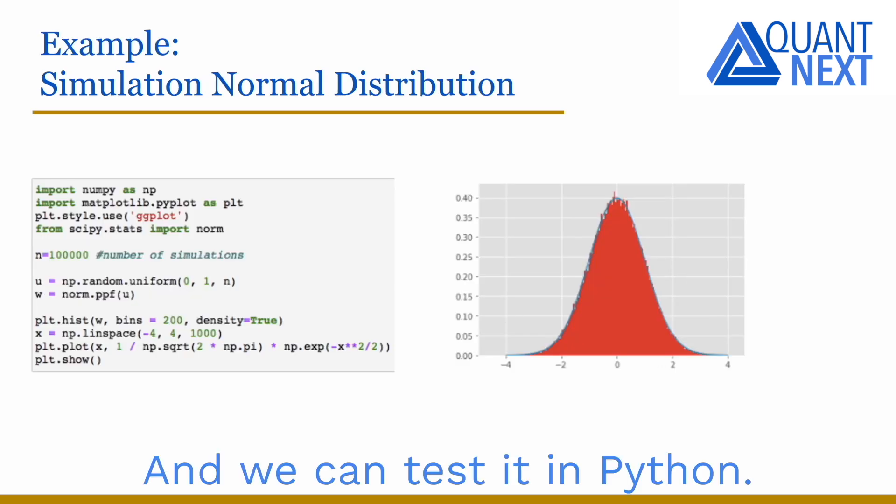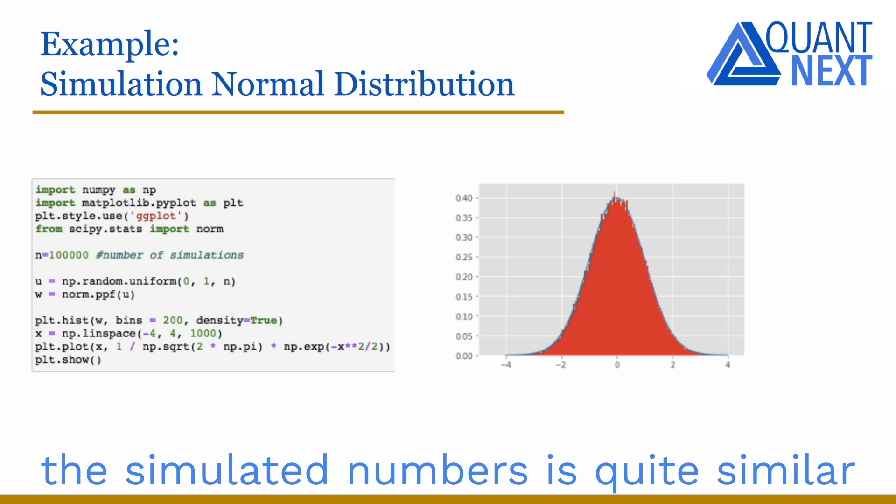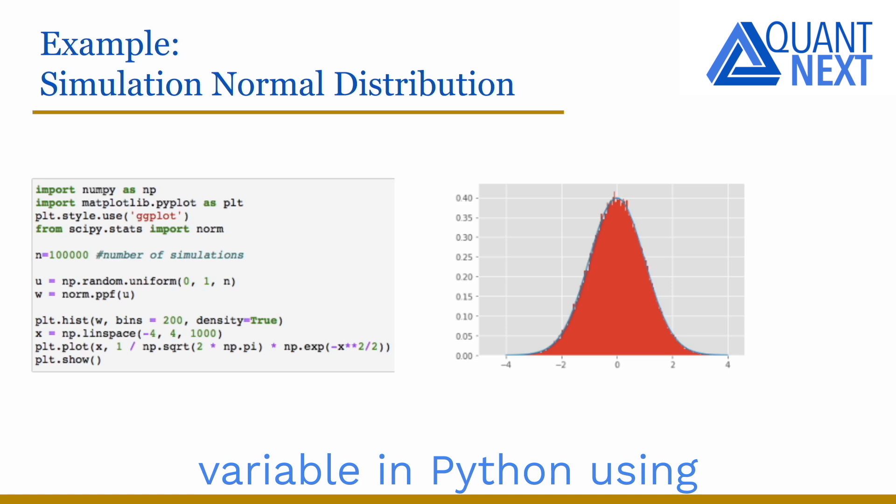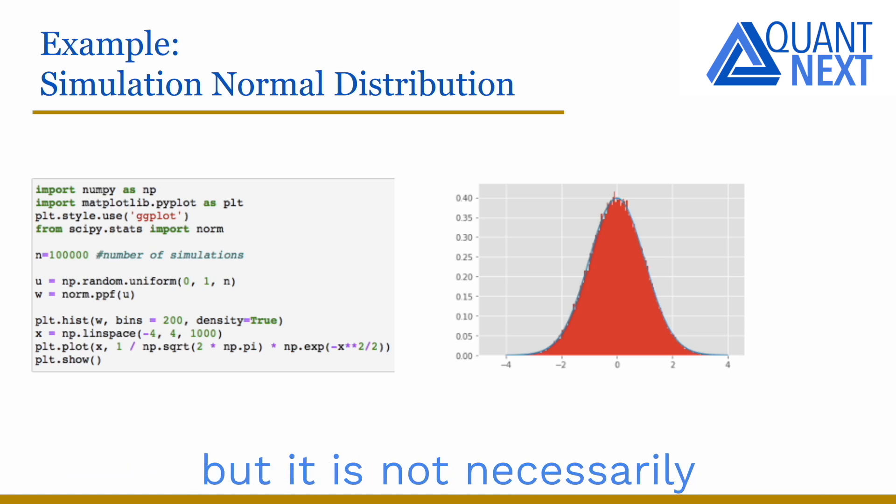And we can test it in Python. Here we simulate a normally distributed variable applying the inverse of its cumulative distribution to a uniformly distributed variable. After running 1 million simulations we see as expected that the distribution of the simulated numbers is quite similar to the Gaussian distribution. Of course we could directly simulate a normally distributed variable in Python using the appropriate library and function but it is not necessarily always the case.